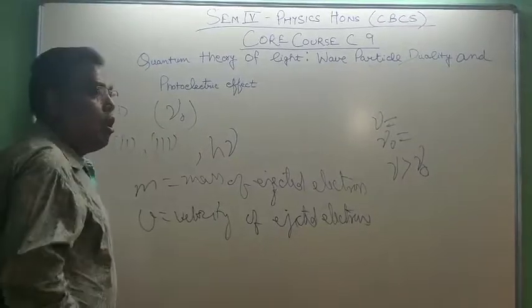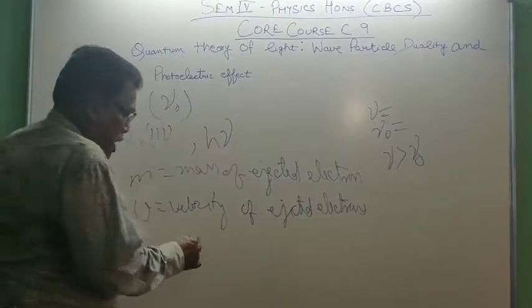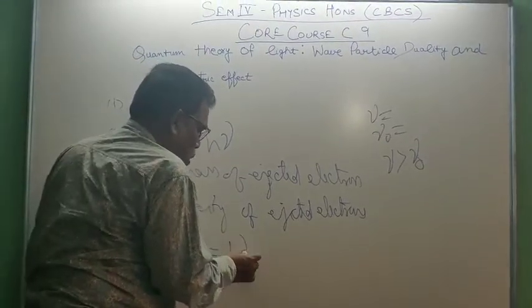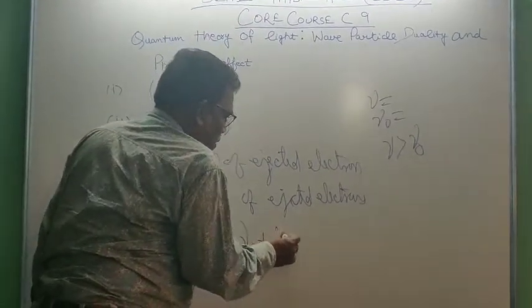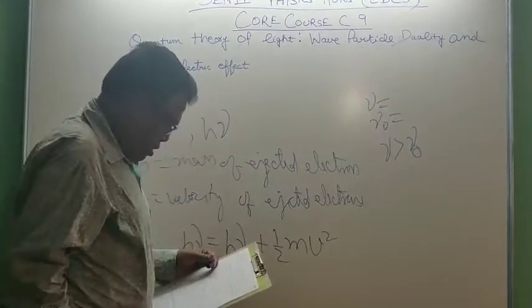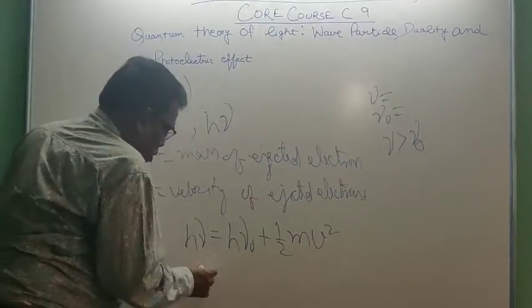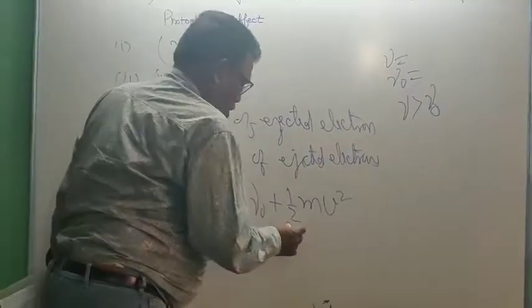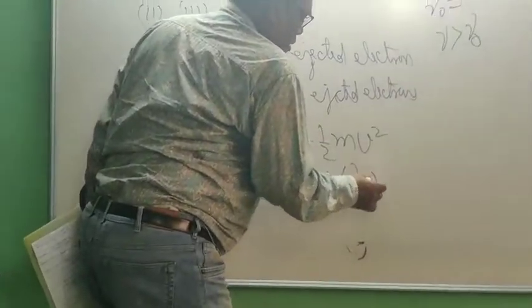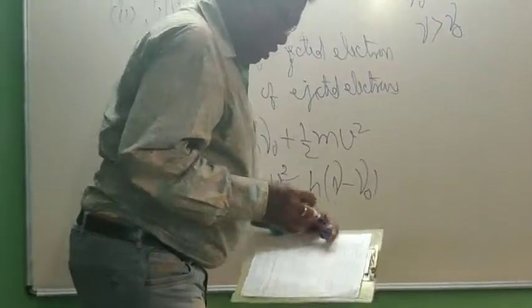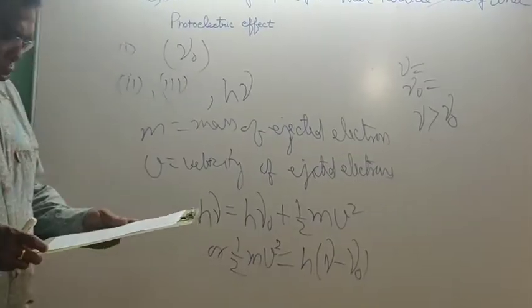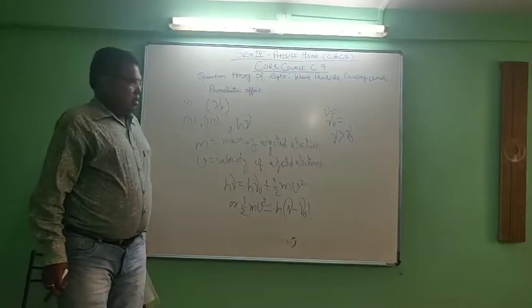Then, according to law of conservation of energy, H nu - this is our total energy - is equal to H nu naught plus half mv square, or half mv square is equal to H nu minus nu naught. This equation is called Einstein's photoelectric equation.